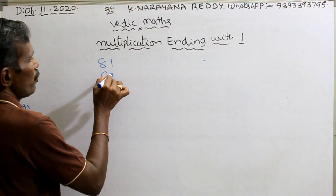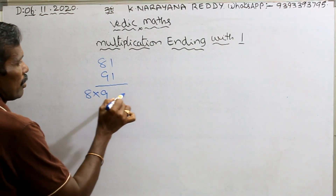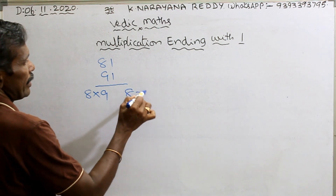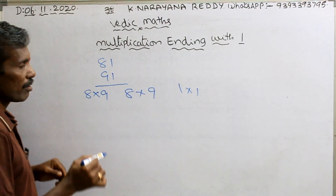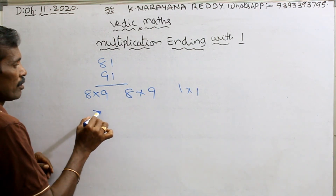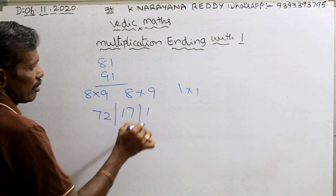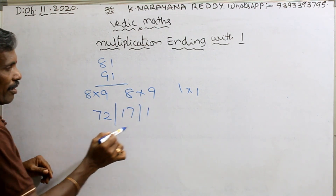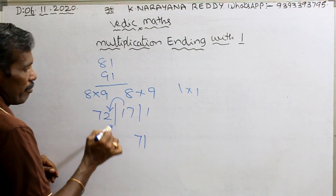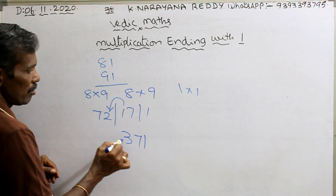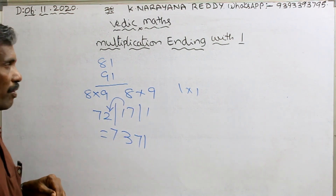81 into 91: multiplication 8 into 9 is 72, next addition 8 plus 9 is 17, next 1 into 1. That is all. Balancing rule: 1, 7, result is 7371.